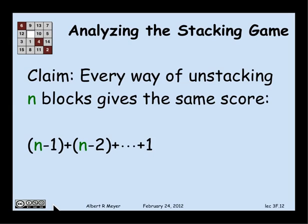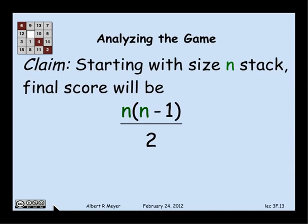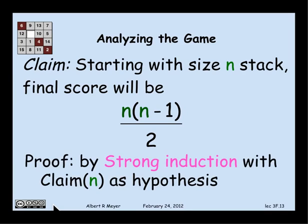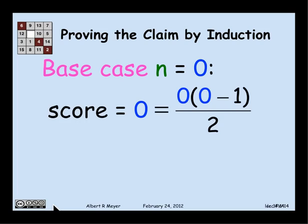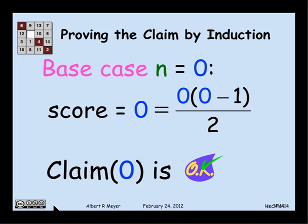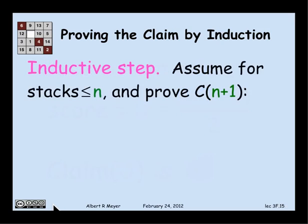Every way of unstacking n blocks gives the same score. Well, what score? Well, we know that the score for the simple strategy of taking one block off at a time is this sum from 1 to n minus 1. And that has a nice formula, n times n minus 1 over 2. So we can formulate our claim that no matter how you play the unstacking game with a stack of size n, your final score will be n times n minus 1 over 2. And we're going to prove this by strong induction with this statement called a claim of n is going to be the induction hypothesis. That's what we're trying to prove. Well, let's start in the usual way. The base case is n equals 0. Well, you might be bothered. That's no blocks. Well, let's see what happens. With no blocks, the score is 0 because there's nothing to do. And indeed, the formula that is alleged to be your score comes out to be 0. So the base case n equals 0 works.